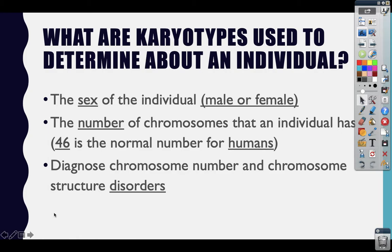So what can we learn from a karyotype? Karyotypes can tell us multiple things. First, they can tell us the sex of the individual — whether the person is male or female from a genetic standpoint. We can also figure out the total number of chromosomes the person has. You need to write down that 46 is the normal number of chromosomes for humans, because you'll have to analyze karyotypes and determine if a person has a chromosome number disorder.